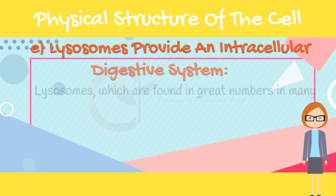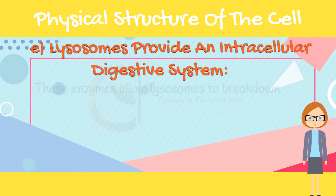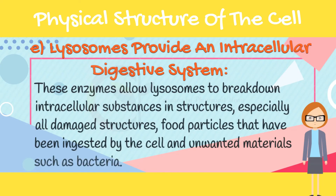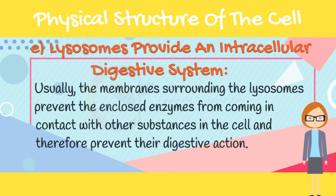Lysosomes provide an intracellular digestive system. Lysosomes, which are found in great numbers in many cells, are small spherical vesicles surrounded by a membrane that contains digestive enzymes. These enzymes allow lysosomes to break down intracellular substances and structures, especially damaged structures, food particles ingested by the cell, and unwanted materials such as bacteria. Usually the membranes surrounding the lysosomes prevent the enclosed enzymes from coming in contact with other substances in the cell, and therefore prevent their digestive action.